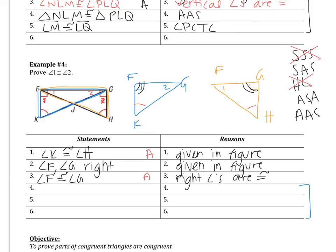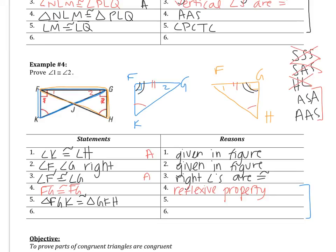Let's see how you did. You should have recognized we're not using SAS, but rather ASA or AAS, so you needed a pair of sides. Both triangles share side FG, so FG is congruent to FG by the reflexive property. Triangle FGK is congruent to triangle GFH by AAS — two pairs of angles and a pair of non-included sides. Then angle 1 is congruent to angle 2 by CPCTC.